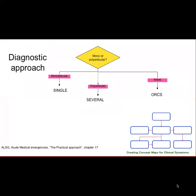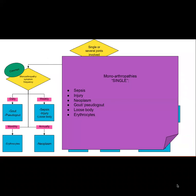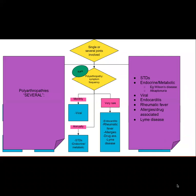The conditions that involve only one joint are memorized using an acronym called SINGR: sepsis, injury, neoplasm, gout, loose body, and erythrocytes. Monoarthropathy is a very common presentation.